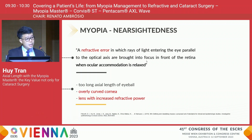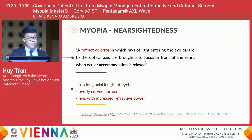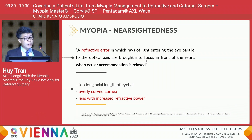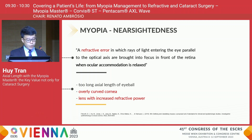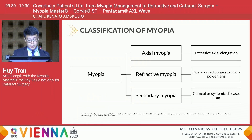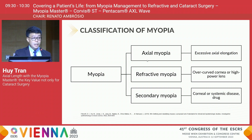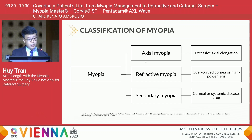Nearsightedness can result from a mismatch between the refractive power of the ocular refractive components and the length of the eye when ocular accommodation is fully relaxed, resulting in the focus of the image in front of the retina and therefore blurred distance vision. Currently, myopia has been classified into three groups: axial myopia due to excessive axial elongation, refractive myopia due to high power of the lens and steep cornea, or secondary myopia due to other corneal or systemic disease.